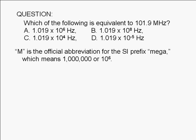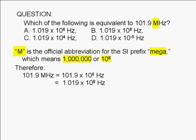Uppercase M is the official abbreviation for the SI prefix mega, which means 1 million or 10 to the 6. Therefore, 101.9 megahertz is equal to 101.9 million hertz or 101.9 times 10 to the 6 hertz.